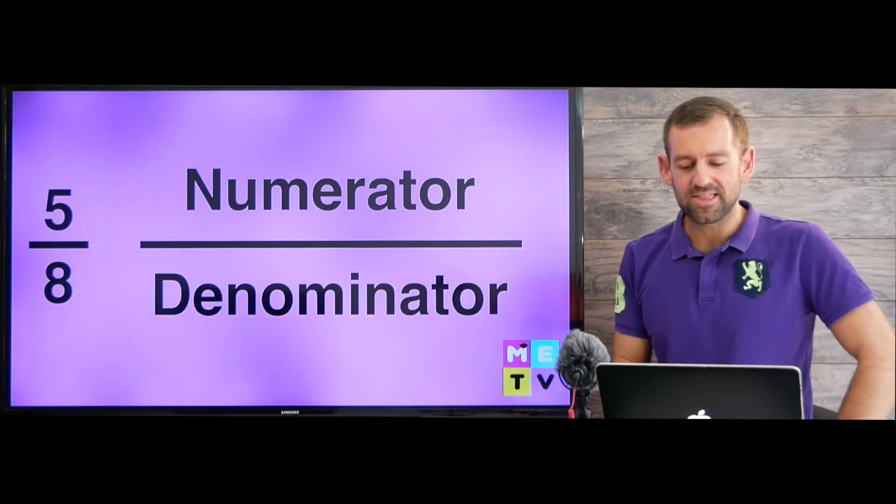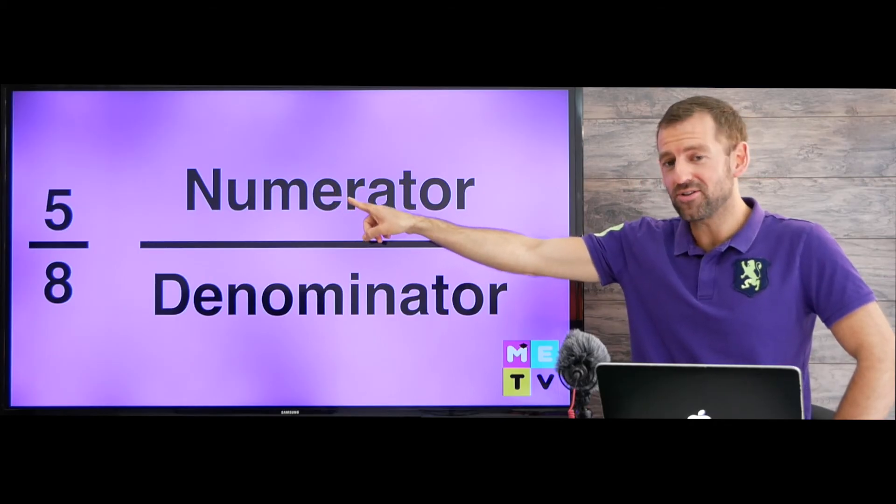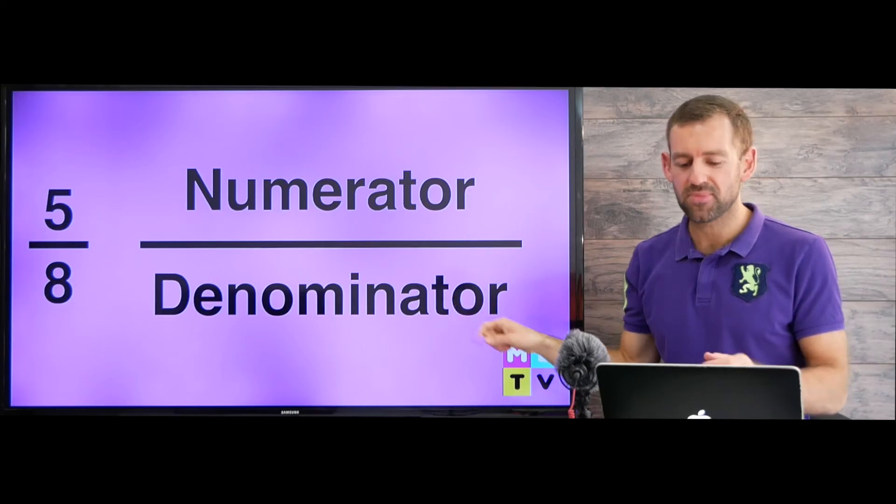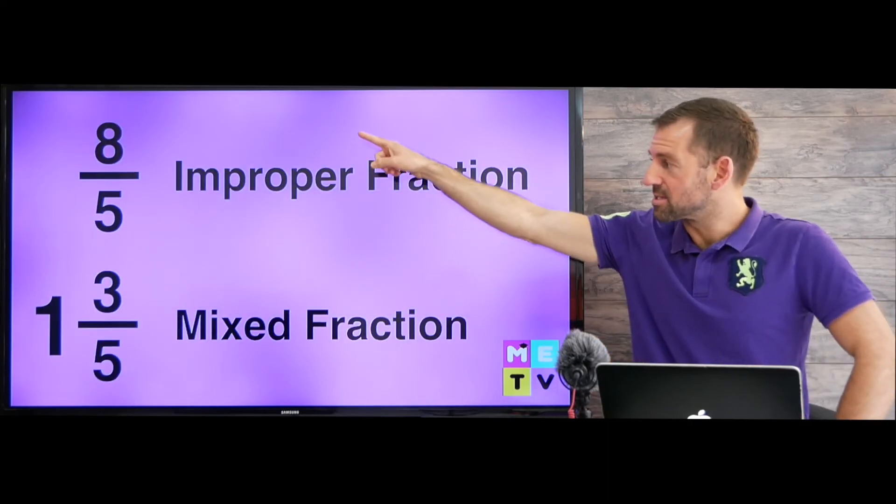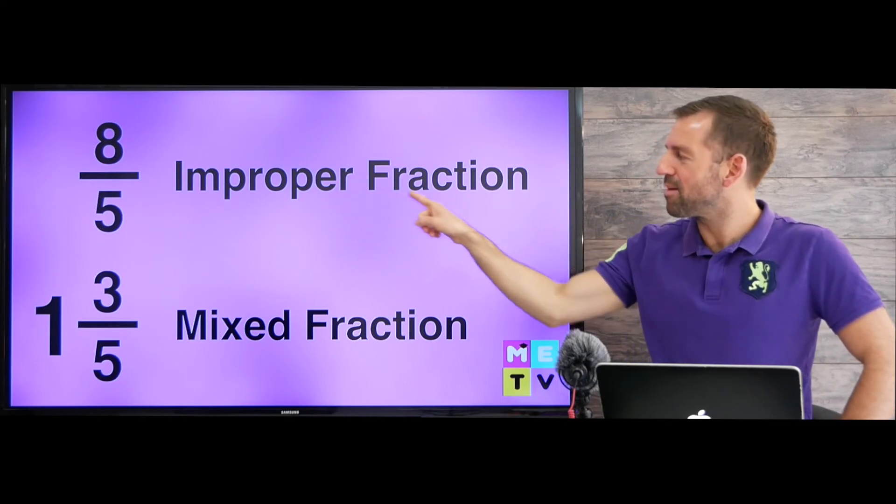So let's do a little bit of math. The top number is called the numerator, and the bottom number is called the denominator. Now, when the numerator is bigger than the denominator, it's called an improper fraction,